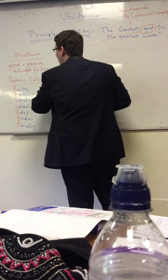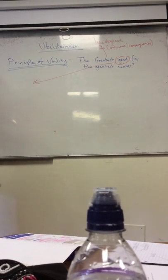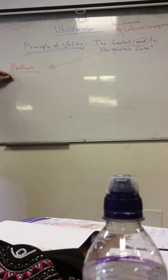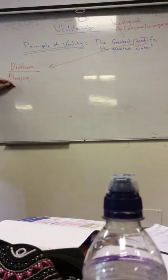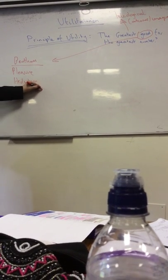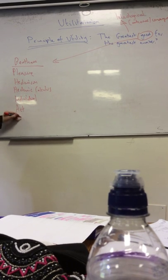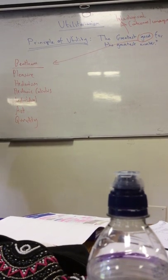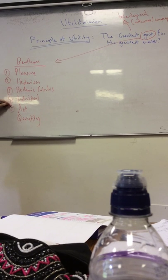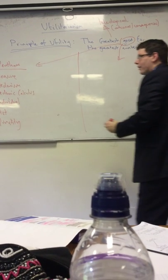To summarise Bentham: he says good equals pleasure, it's hedonism, you use the hedonic calculus, it's an individual approach, it's act utilitarianism, and it's quantitative. That covers one side of the argument.